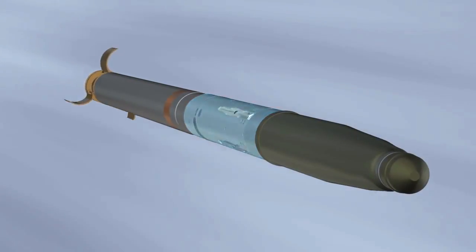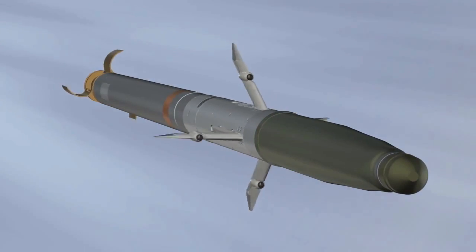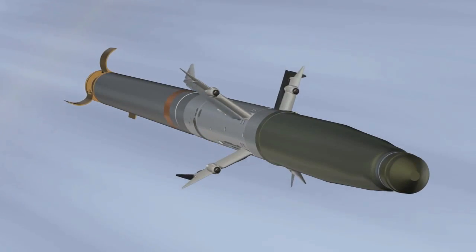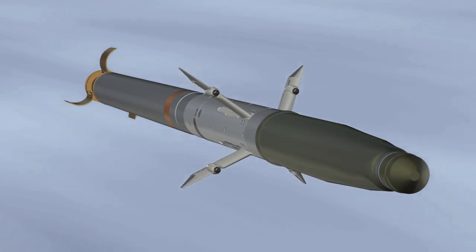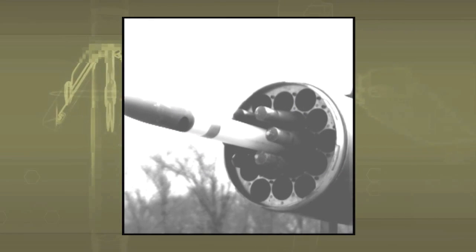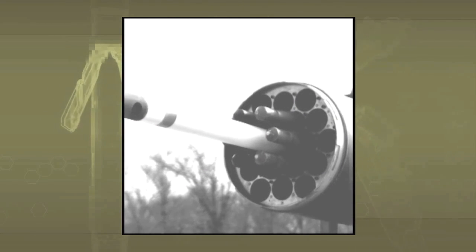Due to its mid-body design and laser seeker aperture placement, APKWS is a lock-on after launch weapon. The most obvious advantage of this design was revealed during adjacent rocket fire testing. The testing consisted of six APKWS-equipped inert rockets placed into the tubes surrounding an unguided rocket.